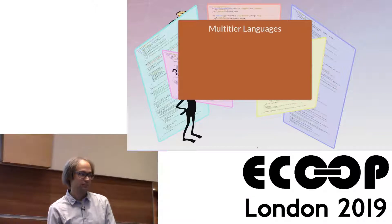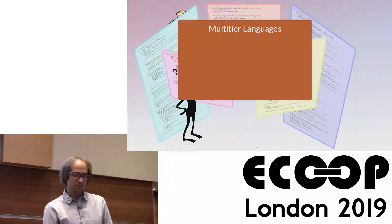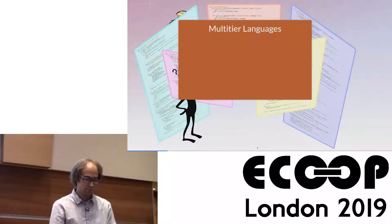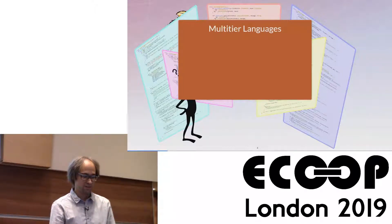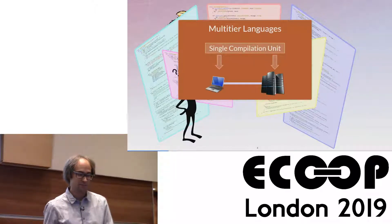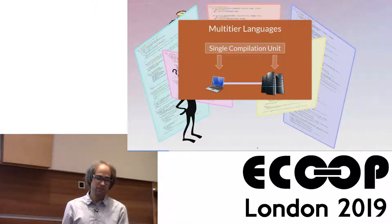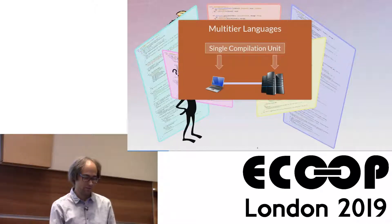There is a class of languages called multi-tier languages, which allow you to implement a distributed application in a more coherent way. The idea is that you can write your entire application in a single compilation unit, and the compiler automatically generates the code for the different components for you.